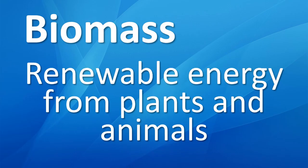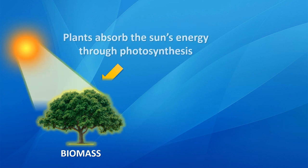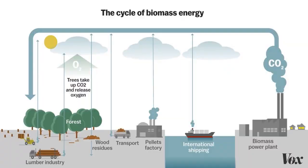Another way of producing energy is called biomass — a renewable energy from plants and animals. Plants absorb energy from the sun through photosynthesis. If you burn those plants, they release chemical energy that we can use to power factories and cities. It's quite a nice cycle: trees take up carbon dioxide and release oxygen. We cut them down, bring them to a power plant, burn them releasing carbon, and that carbon goes back into new trees. So we work in a healthy system where plants produce energy and the cycle continues.